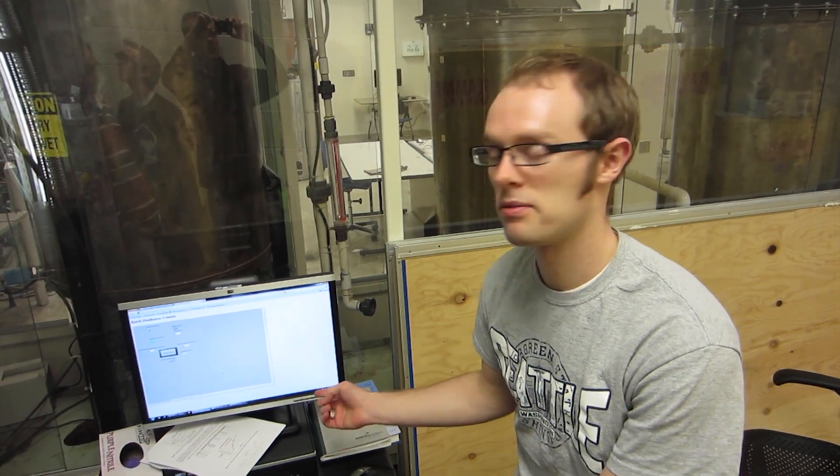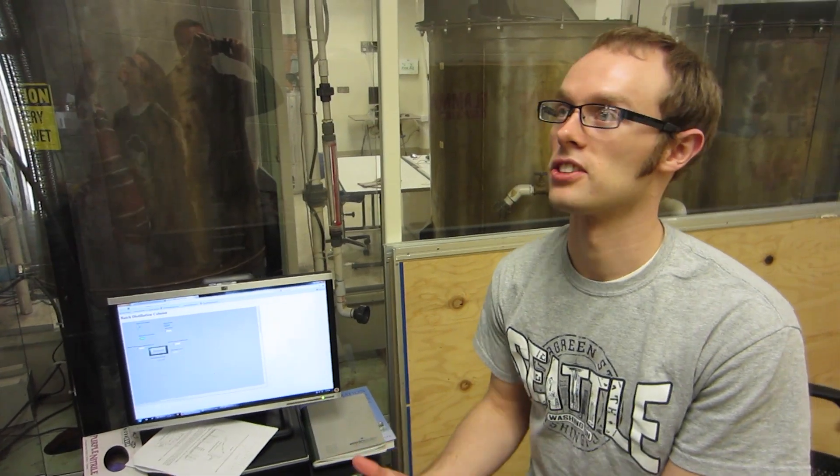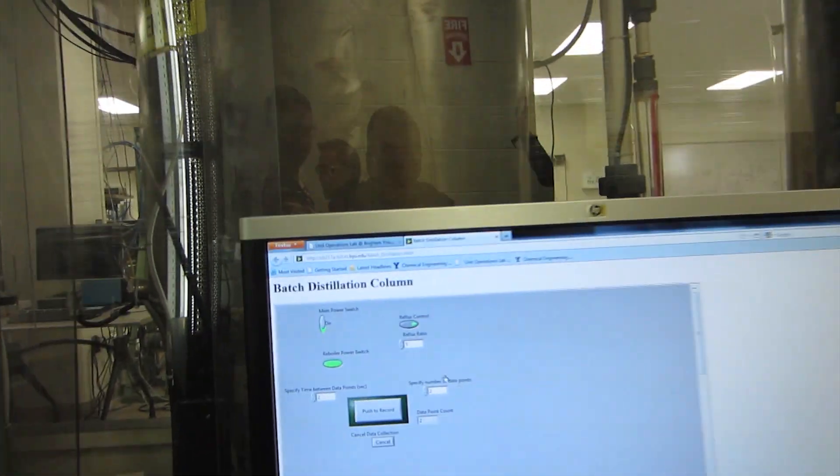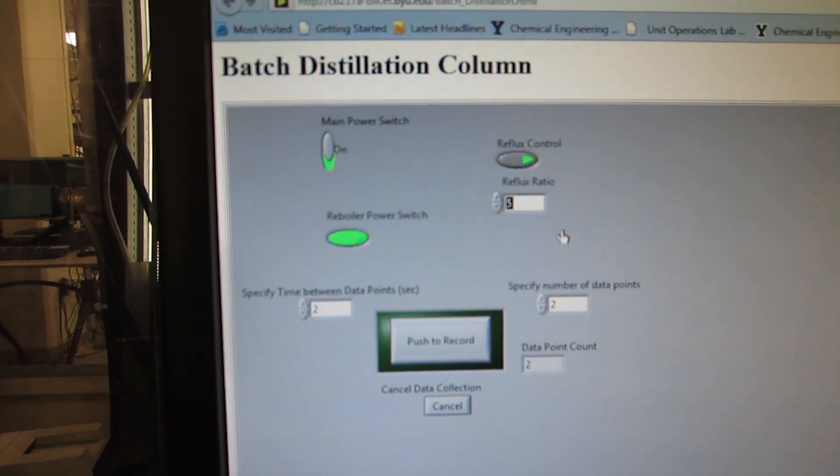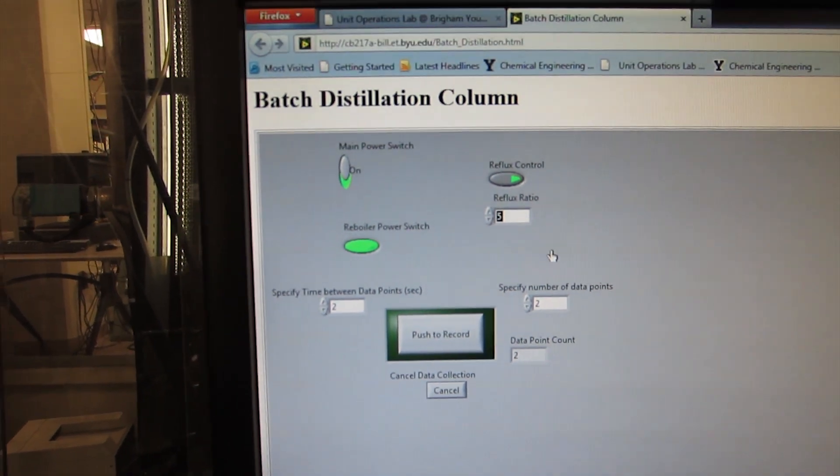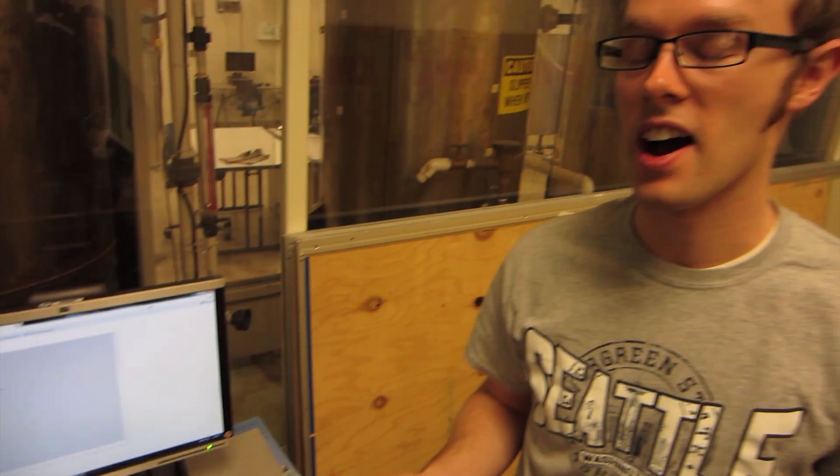The reflux ratio you set with LabView is not the actual reflux rate. You're going to set it right here and then push this button right here, which will turn it on. It's actually about 1.5 less than what you set.